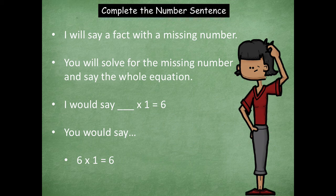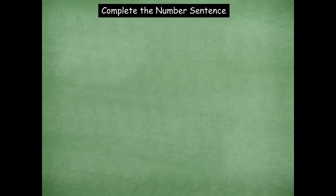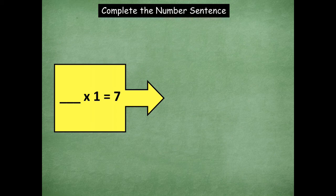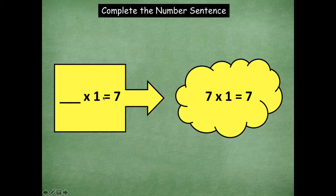Remember, friends, that any number times 1 is always going to remain itself. Okay. So let's do the first one together. So blank times 1 equals 7. Remember, any number times 1 is going to be itself. So 7 times 1 equals 7.